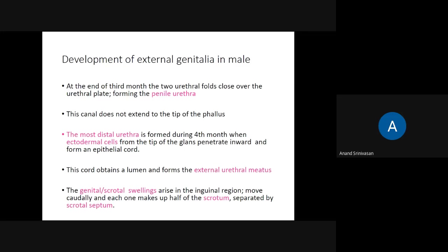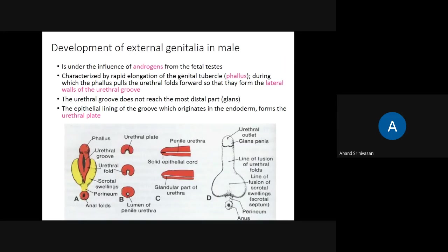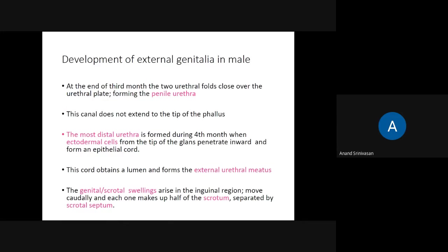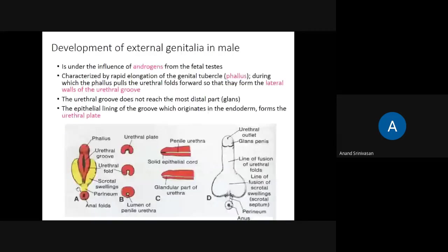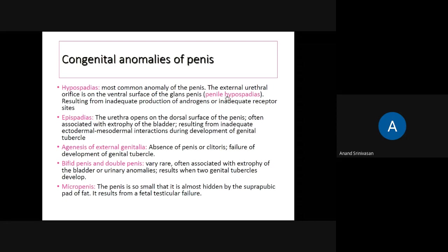Now let's see the abnormalities of external genitalia development in males. Hypospadias: the urethral folds close from the anal part towards the genital tubercle, so if any portion is not fused, the urethra opens on the ventral side of the penis — this is called hypospadias. It could be because of inadequate production of androgens or androgen receptor problems.